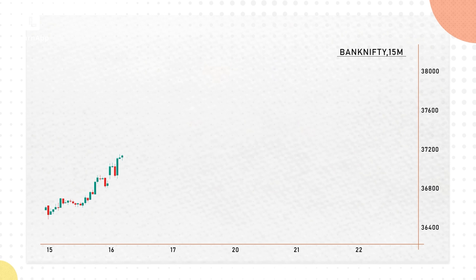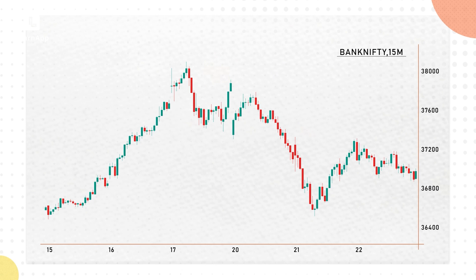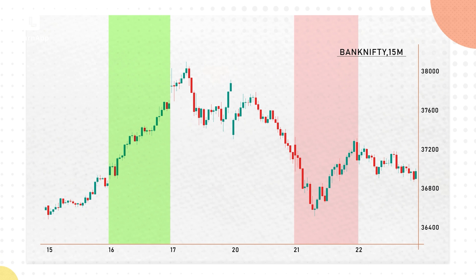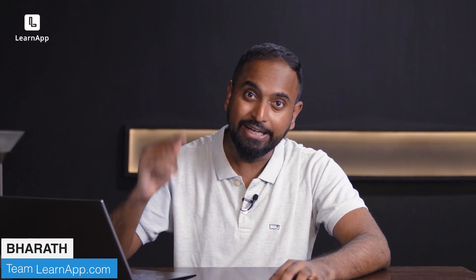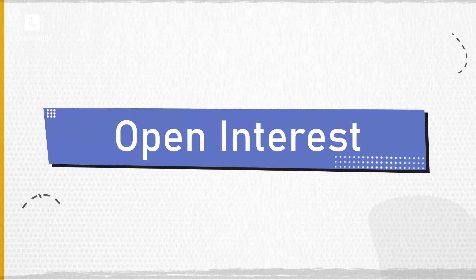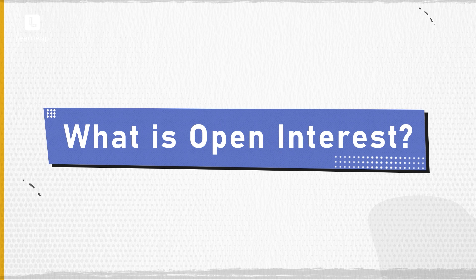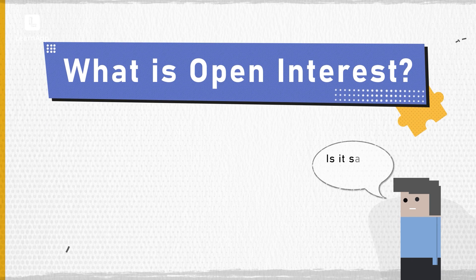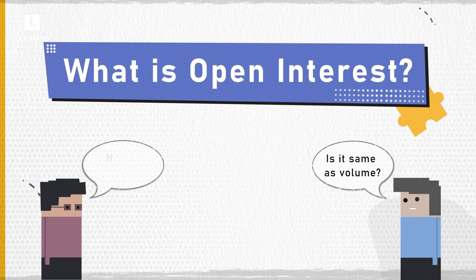On 16th and 21st of September, Bank Nifty moved 1000 points up and 1000 points down, and it was very evident in data. Ever imagine using data to take intraday trading decisions — like anticipating where the breakout would be, where the breakdown would be, or where the reversal can be? Today, let's see one such powerful concept called open interest.